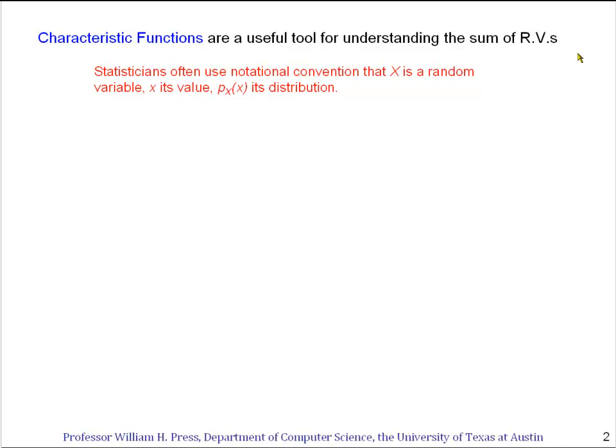In fact we should introduce a little bit of notation at this point. Statisticians often use the convention that a capital letter represents a random variable and the corresponding lowercase letter represents the value of that variable.